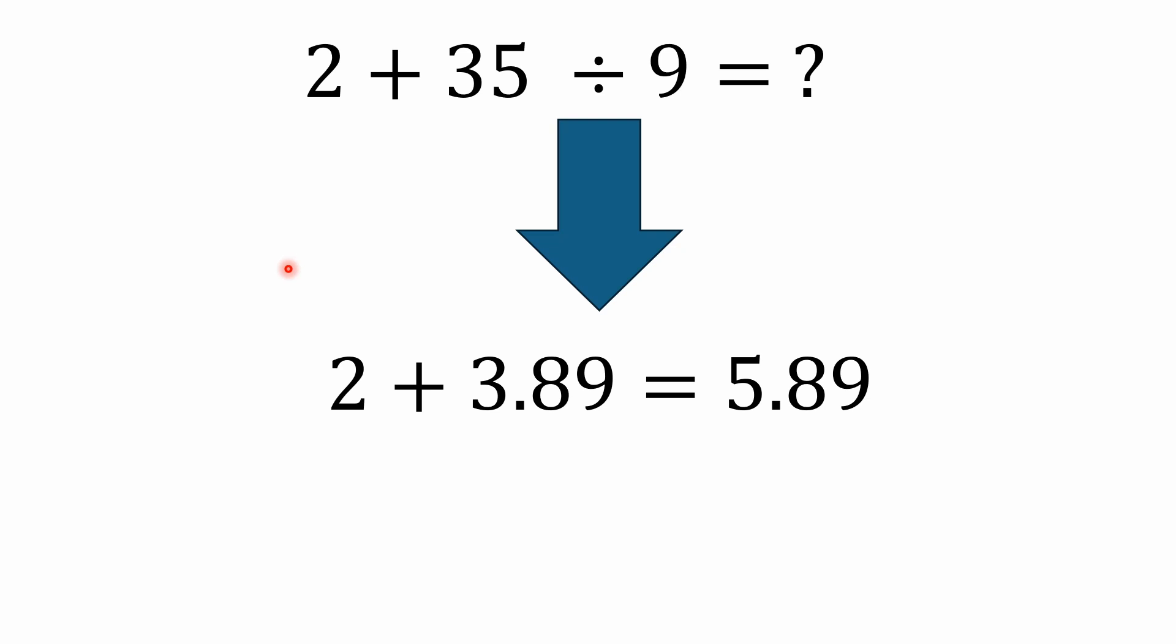So instead of adding 2 + 35, you've got to take 35 ÷ 9. I'm going to round to the nearest hundredths in this case, but 35 ÷ 9 works out to 3.89.